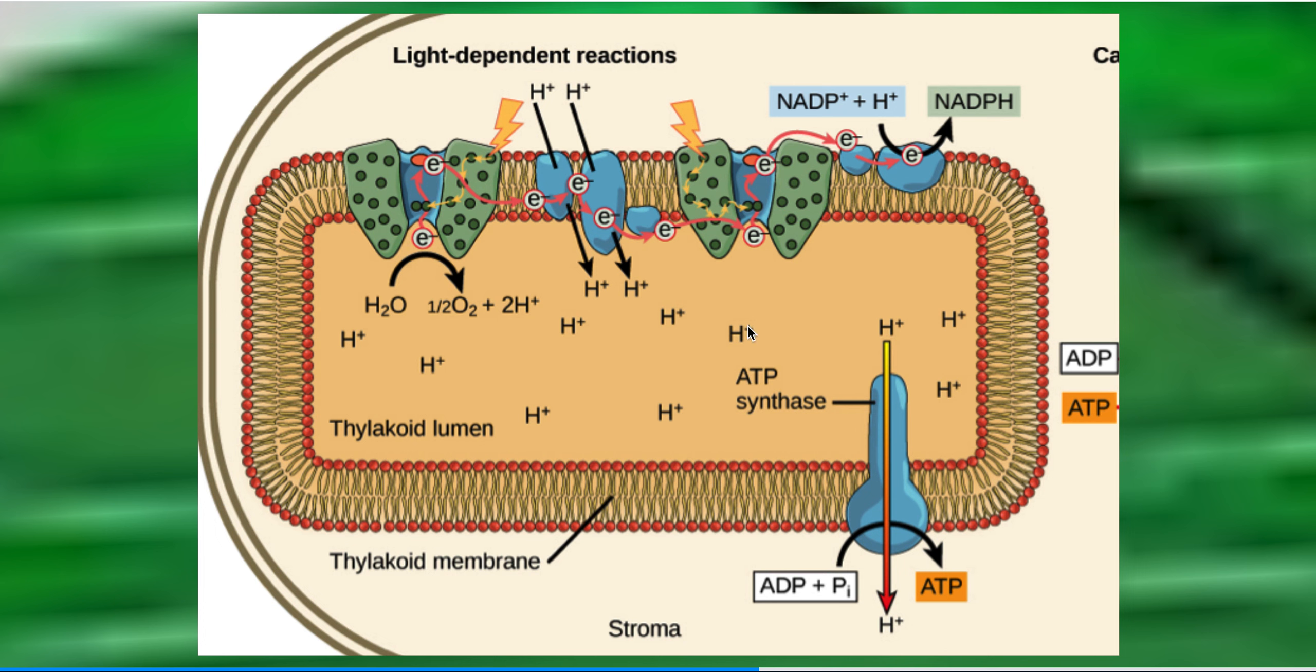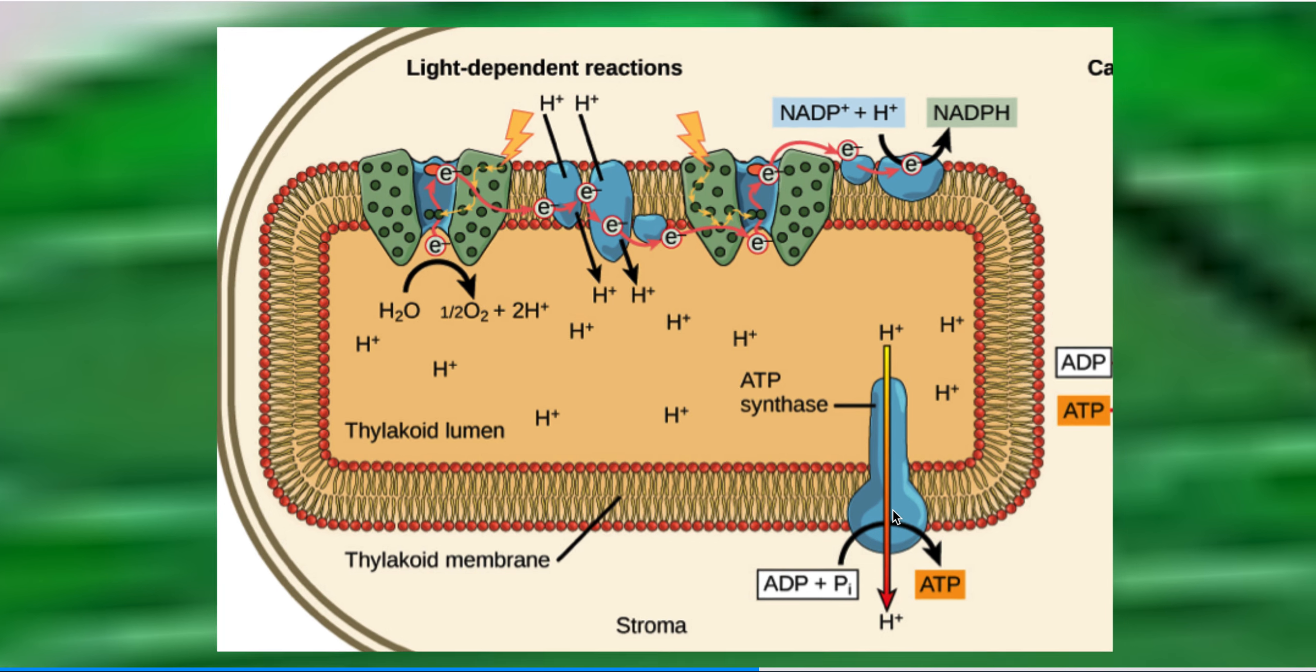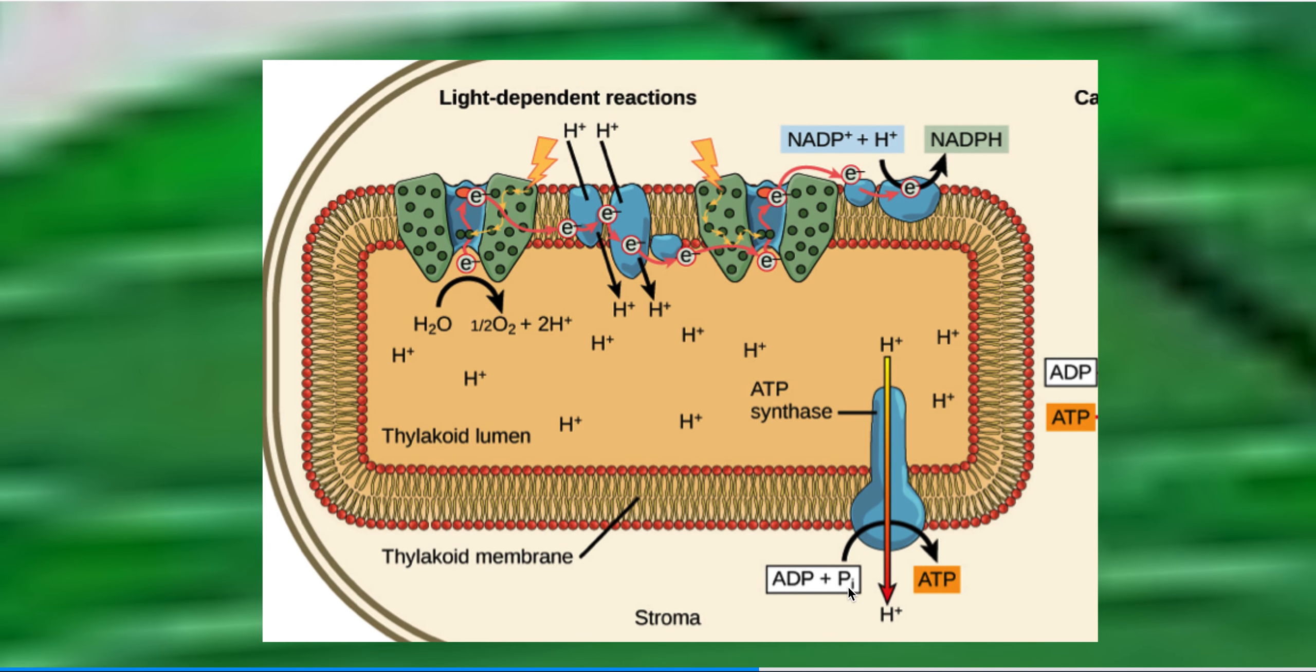And then just like we did in respiration, we're going to use chemiosmotic phosphorylation with the ATP synthase, we're going to allow those hydrogen ions to flow back down their concentration gradient, back into the stroma. And then we're going to use that ATP synthase to force a phosphate onto that ADP, making ATP.